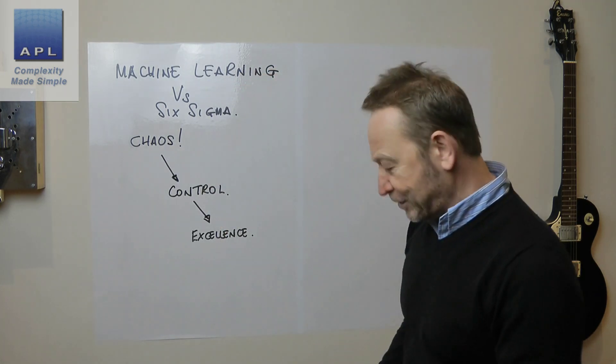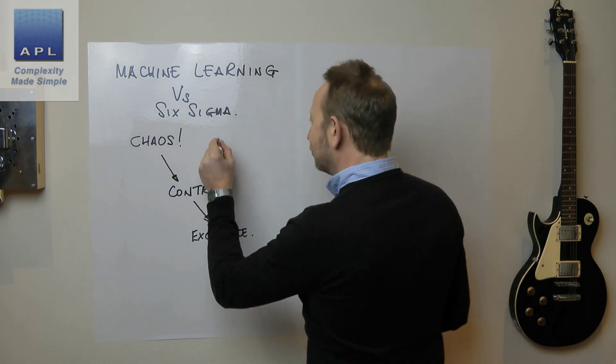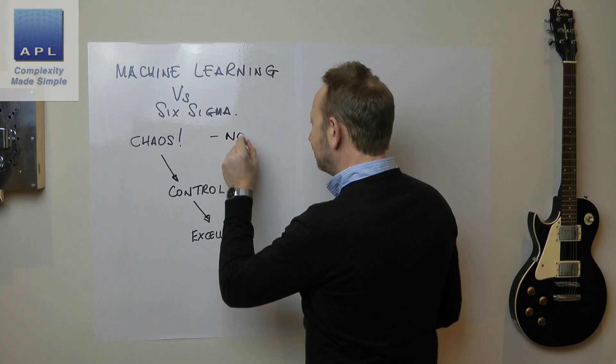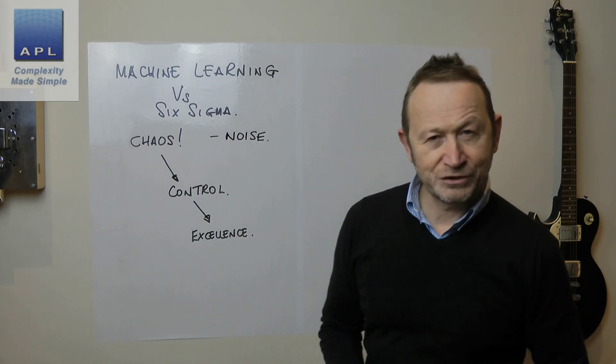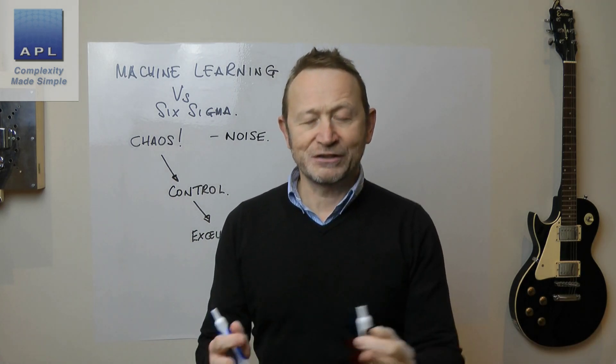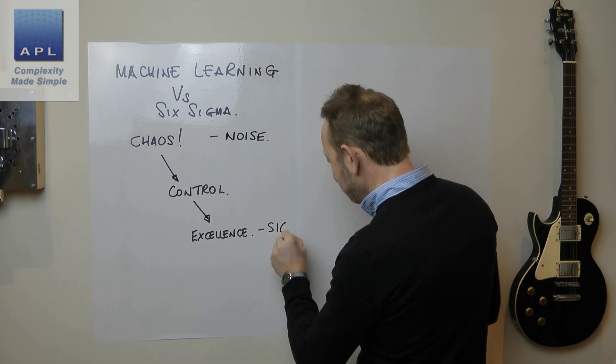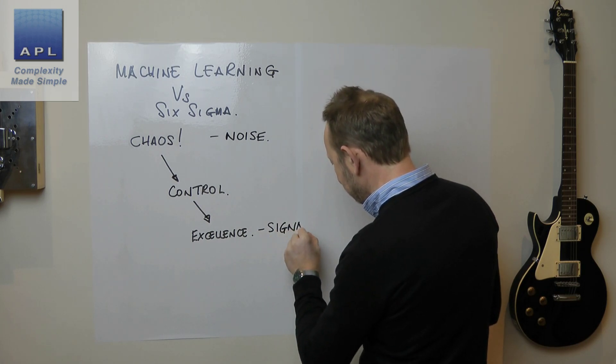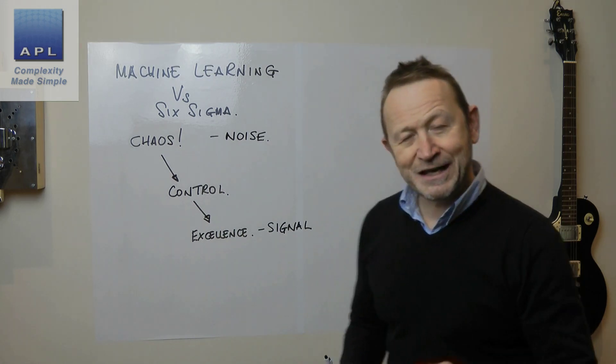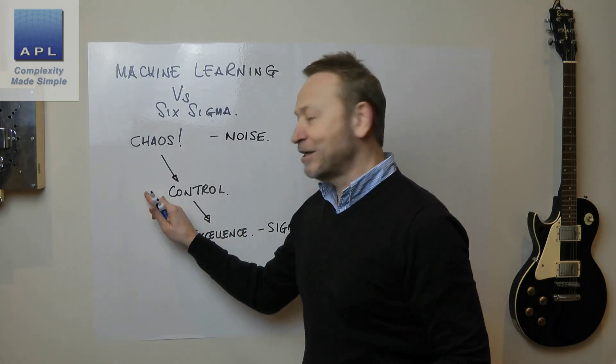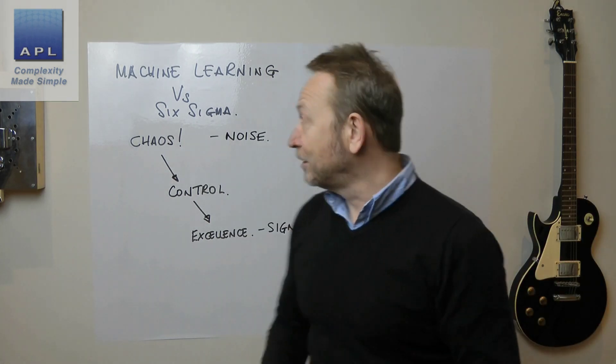Here's the thing you've got to be really careful with. Chaos, control and excellence. The way I would describe this is that chaos is about controlling noise. Excellence is about controlling signal. And you have to be able to do both to get to this point. In fact, excellence stands on top of control.